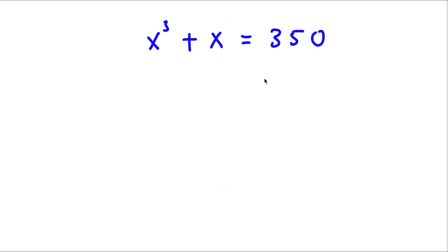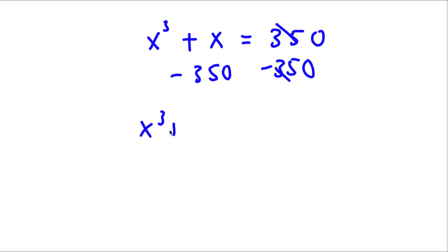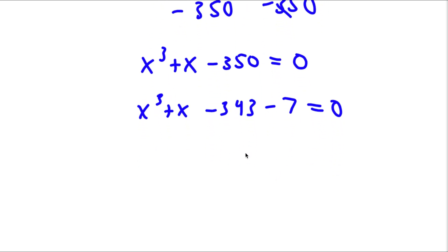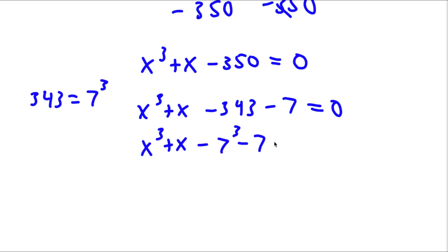All right, so what I'm first going to do is I'm going to subtract 350 on both sides. So now these two cancel out, and I will have x to the power of 3 plus x minus 350 is equal to 0. Now 350 we can rewrite as negative 343 minus 7. This is equal to 0. Now 343 is the same thing as 7 to the power of 3. So now I have x to the power of 3 plus x minus 7 to the power of 3 minus 7 is equal to 0.